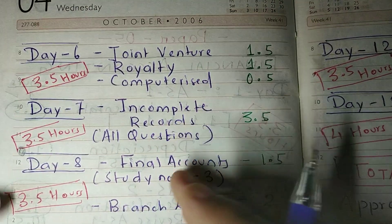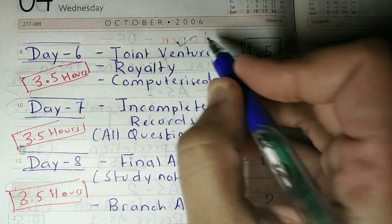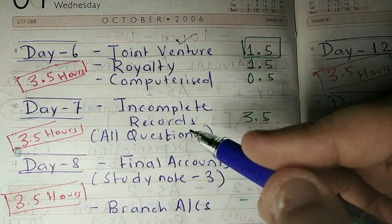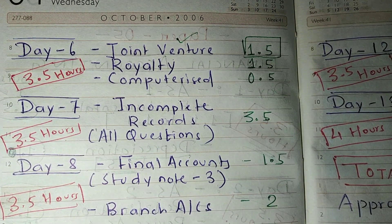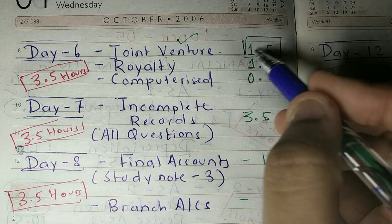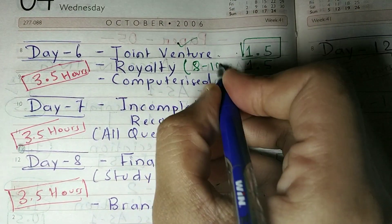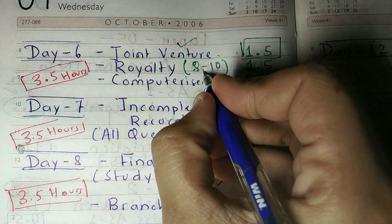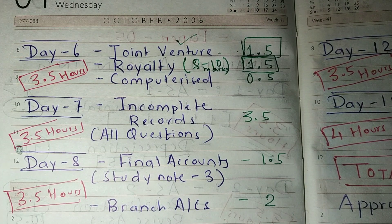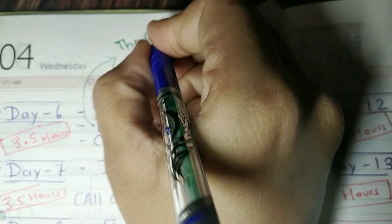On Day 6, you have to learn Joint Venture, which will take 1.5 hours. Before 2019 December term, there were no questions from this chapter, but from that term onwards questions have appeared from Joint Venture, so we cannot leave it. After Joint Venture, you have to study Royalty. Royalty is a chapter where a question carries 8 to 10 marks — so we cannot skip it. Royalty will take 1.5 hours. If you have problems, you can refer to the YouTube channel The Commerce Coach.